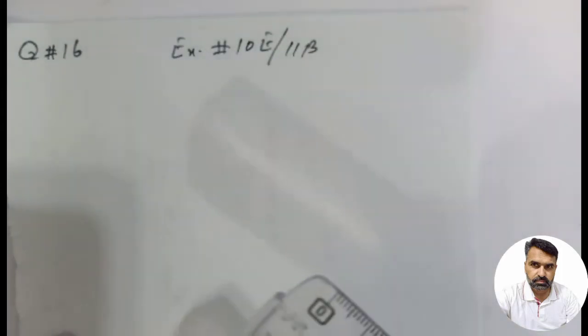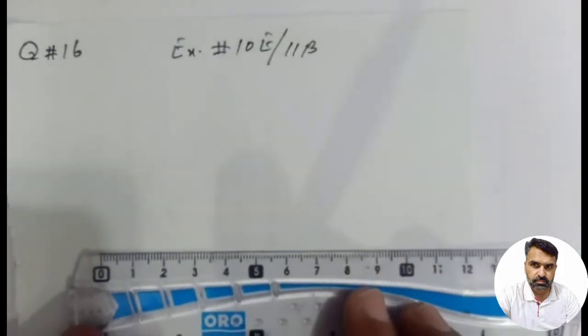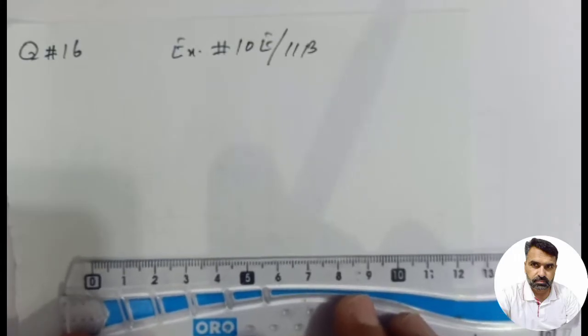Students, the problem asks us to draw a rhombus WXYZ such that each side measures 5 cm and one diagonal measures 10 cm. We need to measure and write down the size of the angle facing the diagonal. Students, 10 cm is the diagonal, this is a rhombus and 5 cm is each side.